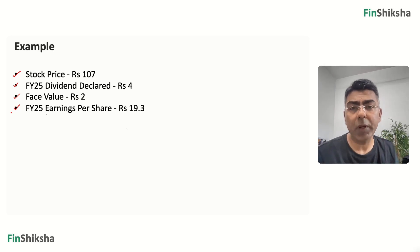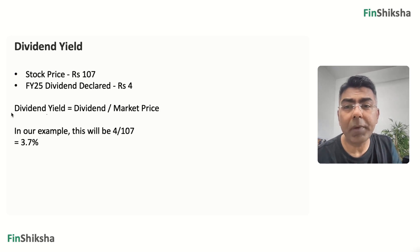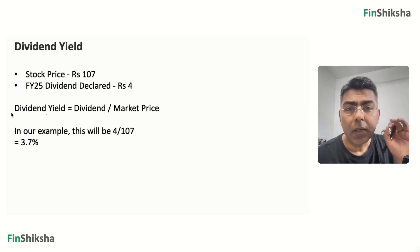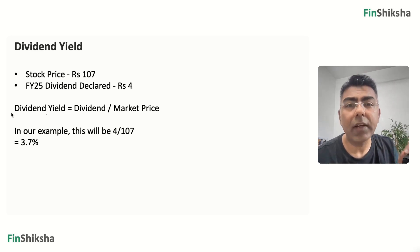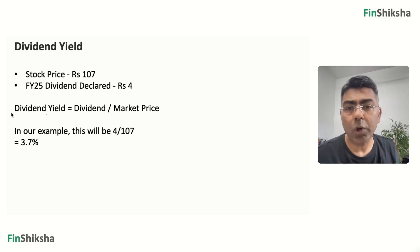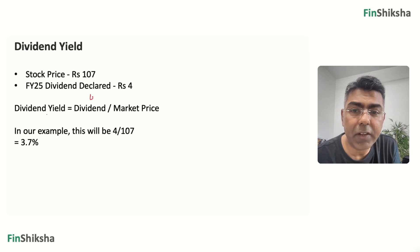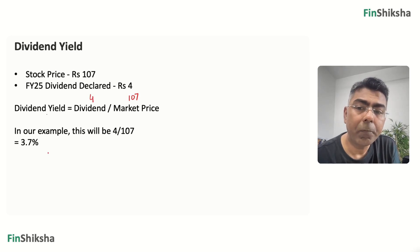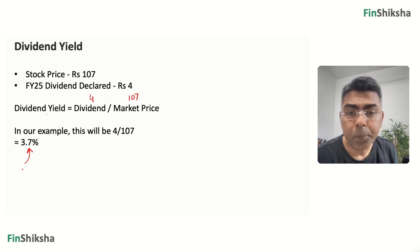Now let's take these terms one by one. The first one is dividend yield — what is the return that you make on the stock in terms of the dividend? As a percentage of the stock price, what is your dividend? That is what dividend yield means. In our example, dividend declared is 4 rupees and market price is 107, so the dividend yield works out to something like 3.7 percent.